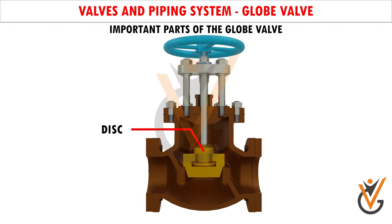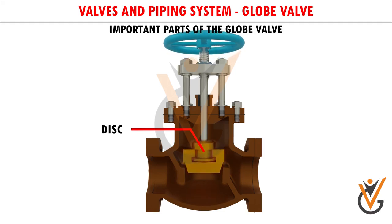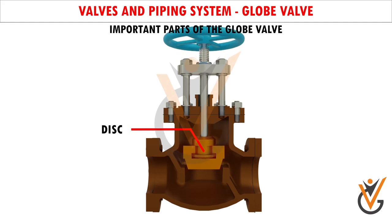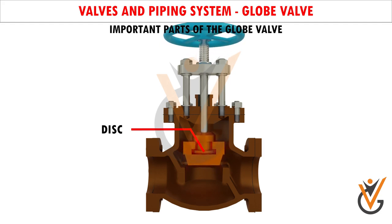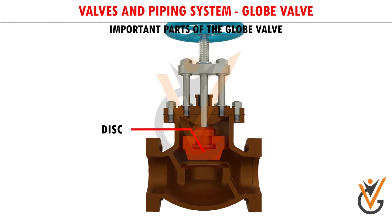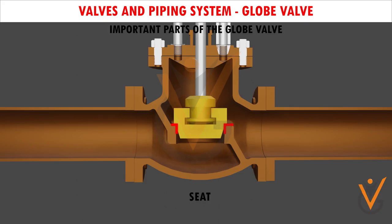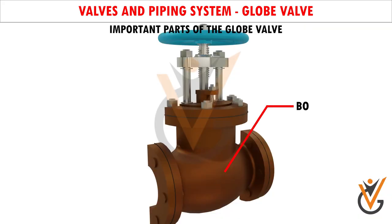Disc: Also called the valve disc, its lower end is correctly machined and sits on the valve seat. The valve and the valve seat have face-to-face contact and must be true to each other to stop the flow. Seat: Also called the valve seat, it is sometimes a replaceable insert. Body: Also called the valve body, it is the housing.